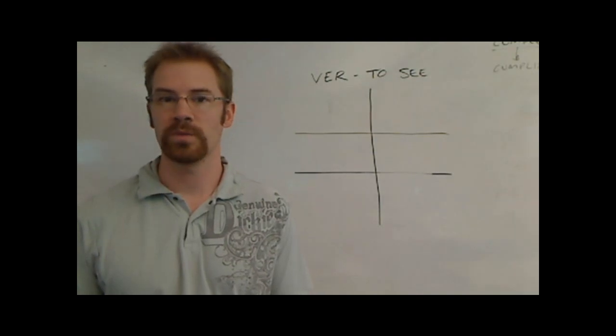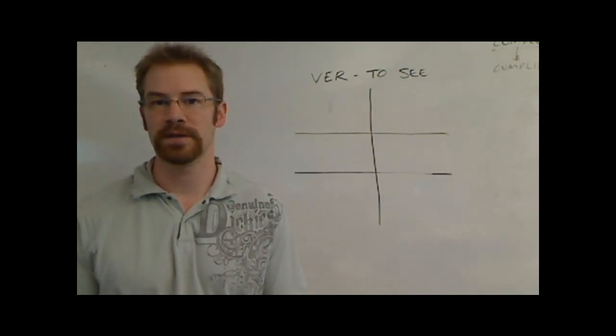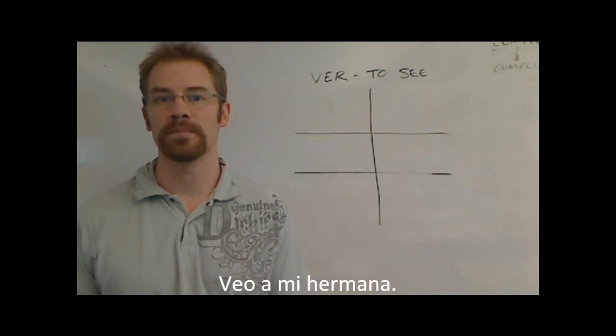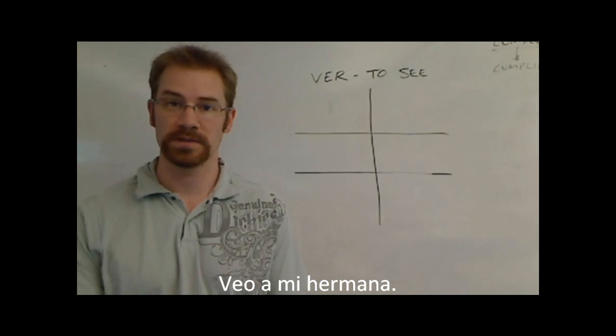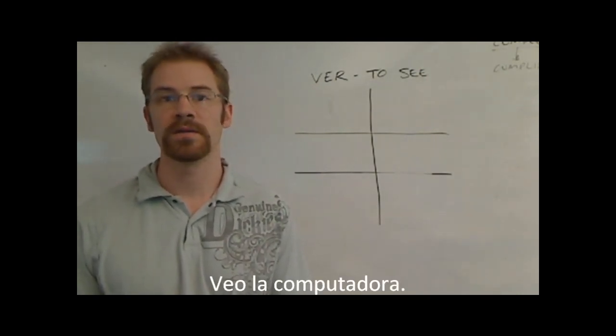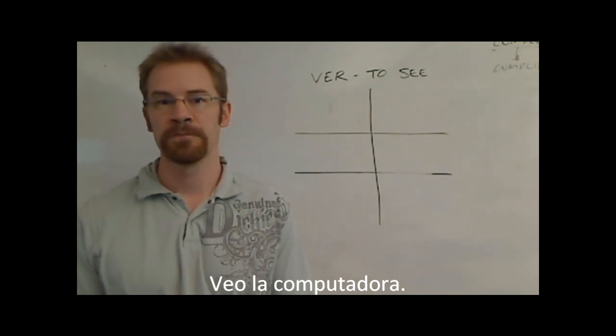The verb ver works the same way. When you see a person, you would say, for example, if I saw my sister, I would say yo veo a mi hermana. But if you see something that's not a person, you don't need the a anymore. So, for example, if I see the computer, yo veo la computadora. You don't need the a anymore because there's nobody involved.